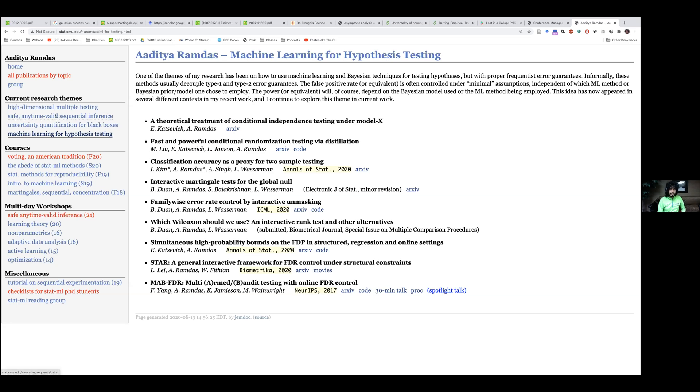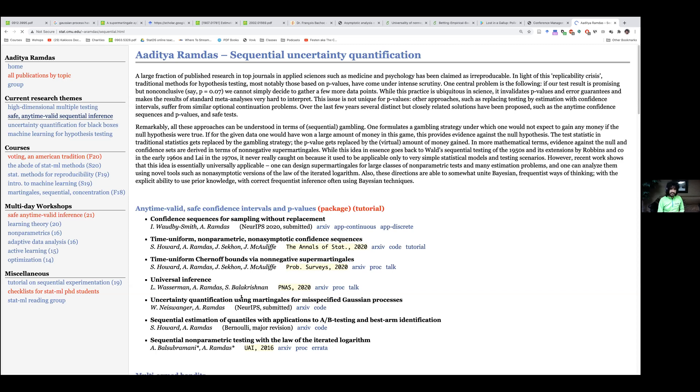Two other areas which I've not talked about are sequential inference. This is a problem of using martingales for quantifying uncertainty when data is arriving sequentially. If you're interested in concentration inequalities and sequential analysis for Gaussian processes, Bayesian optimization, AB testing, all of these, I don't know if you're interested in sequential problems, you might find that relevant.